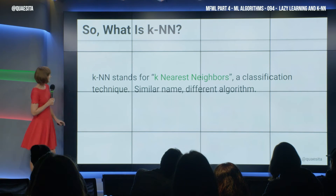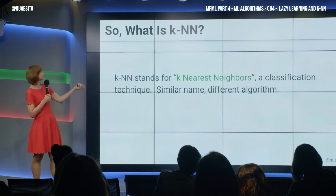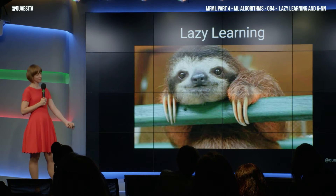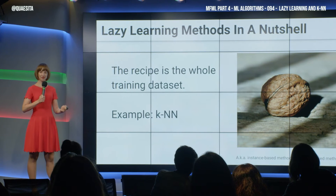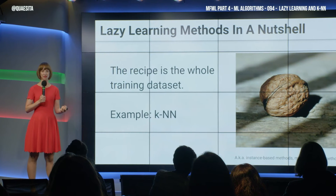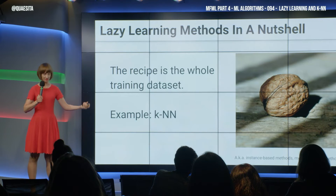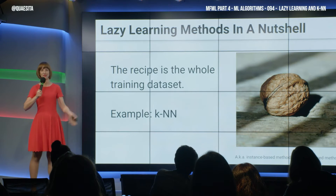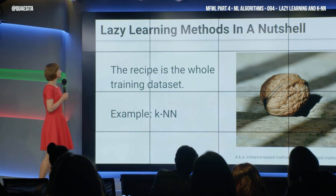So, let's see what K-nearest-neighbors is. It is part of a class of algorithms called lazy learning. And what is lazier than having your recipe be the whole dataset? I'm not going to bother to summarize it. Just use the whole thing.